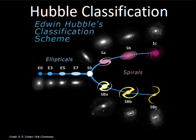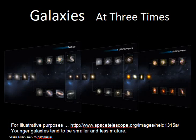Looking back in time by looking at galaxies that are very far from us, all the types of galaxies were present. However, they were smaller, not as well developed, and there were more spiral galaxies than exist presently.